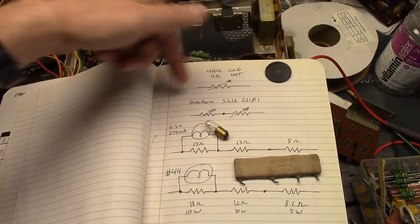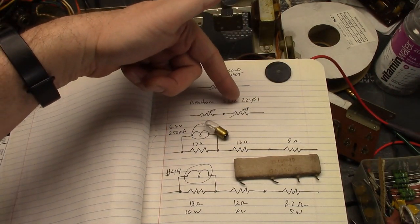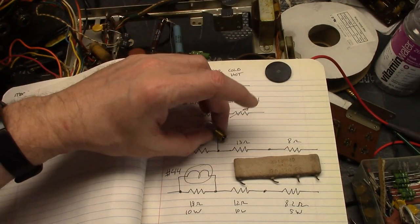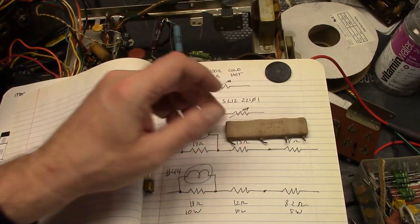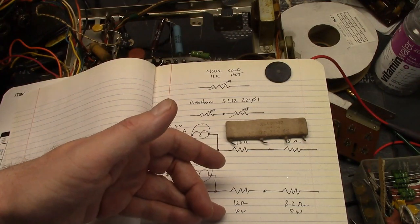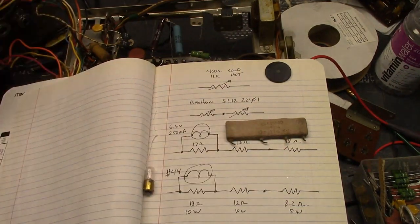Replace this with an AmiTherm SL12222101. Replace the pilot light with a type 44 bulb, and replace the three-section filament dropper with an 18 ohm 10 watt, a 12 ohm 10 watt, and 8.2 ohm 5 watt. There you go.